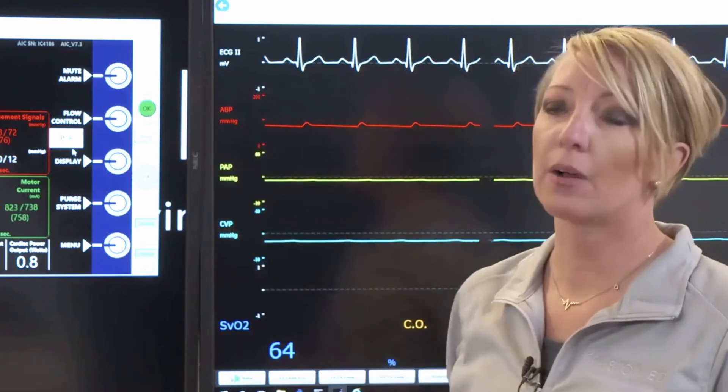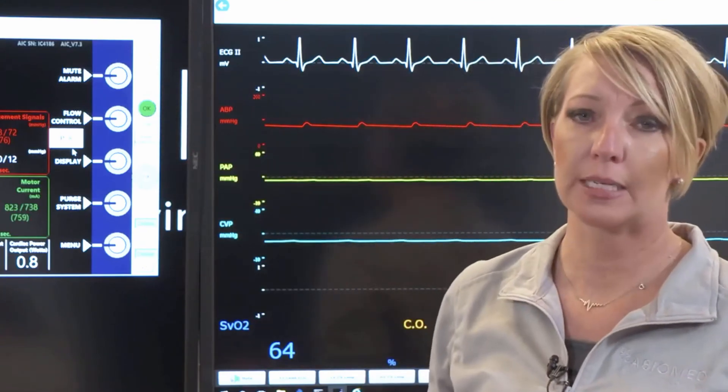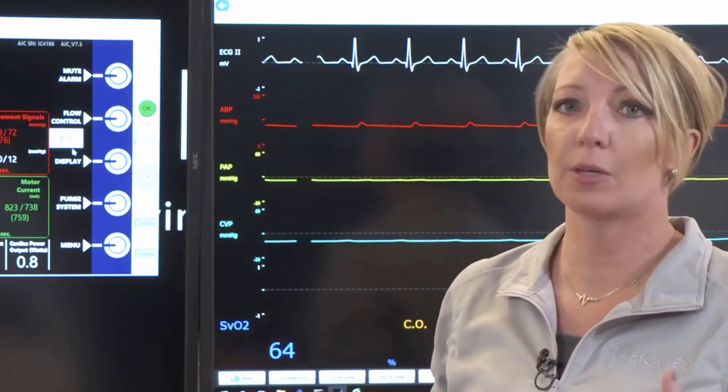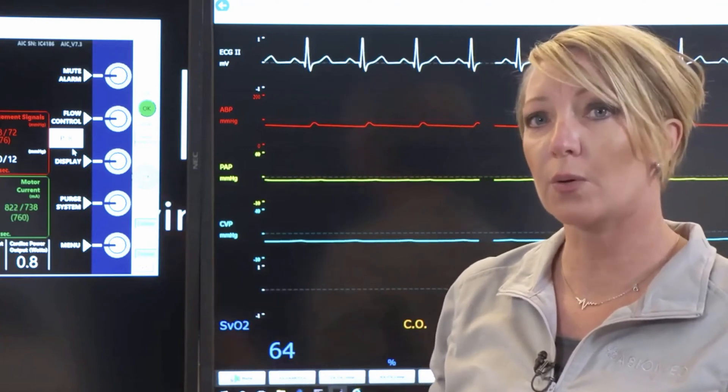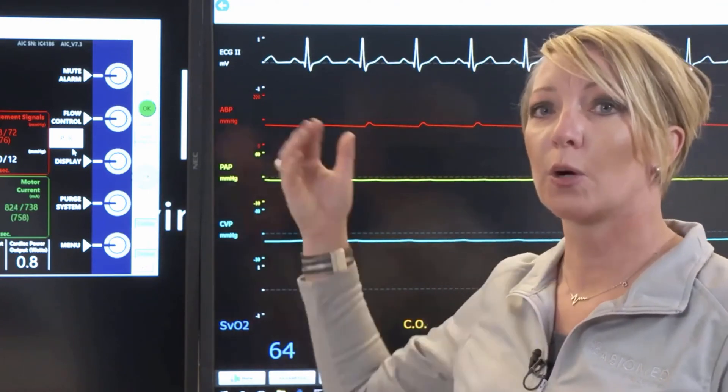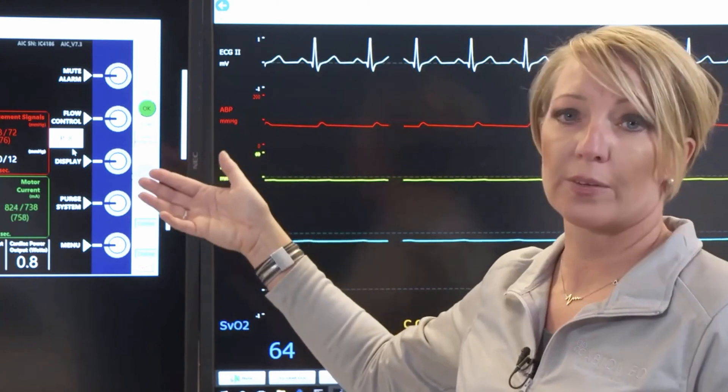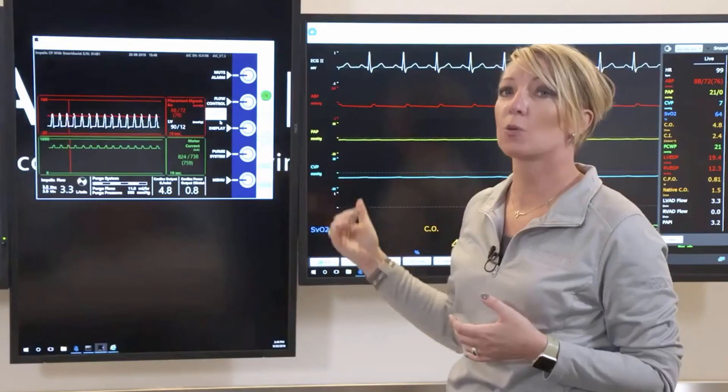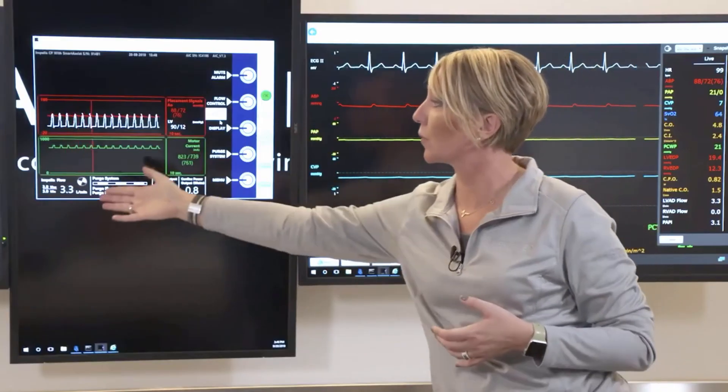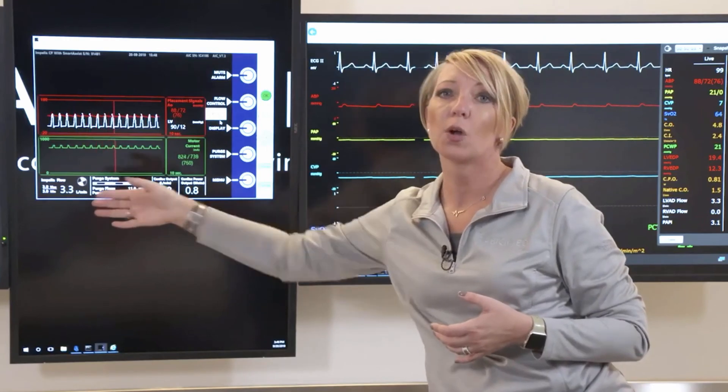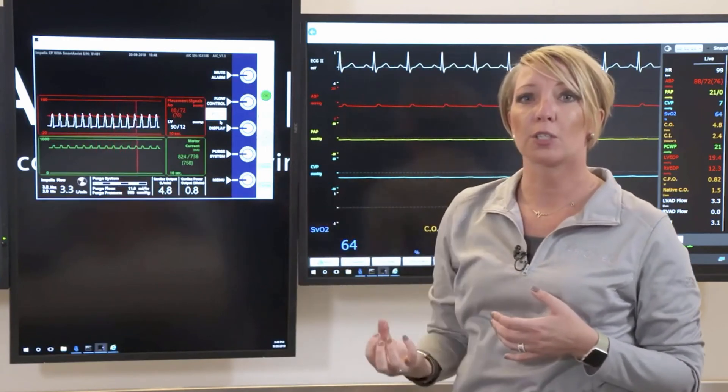The next button down is our flow control button. It does exactly what it says. Anytime you want to control the amount of flow that we're giving that patient, you're going to go into the flow control button. We run the device at different P levels. As you adjust those P levels, that will be reflected in the lower corner where you'll see that flow adjustment.